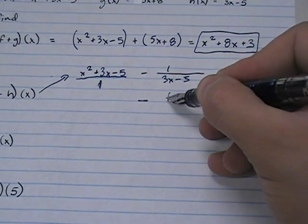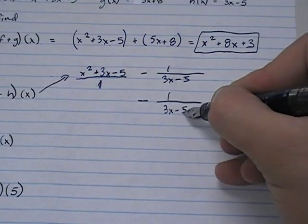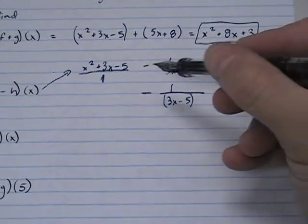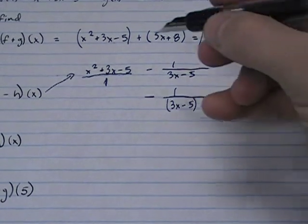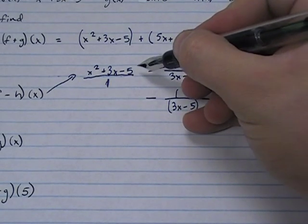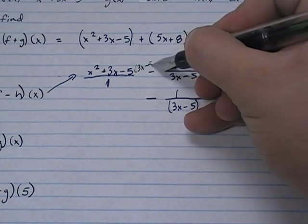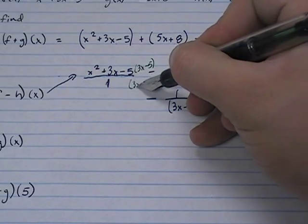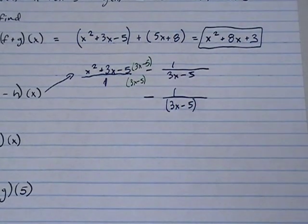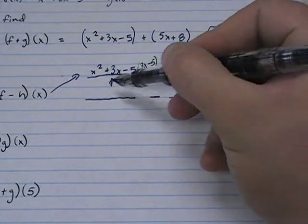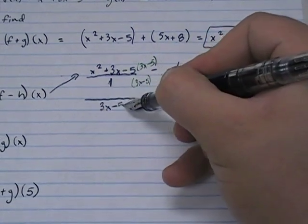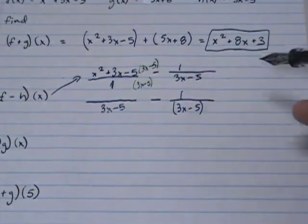Down here, this is going to go unchanged, 3x minus 5. This, on the other hand, we have to multiply by the LCD on the top and the bottom because this is an expression. 3x minus 5 on top, 3x minus 5 on bottom. What we end up with on the bottom is very simple: 1 times 3x minus 5 is 3x minus 5. Notice we have a common denominator.